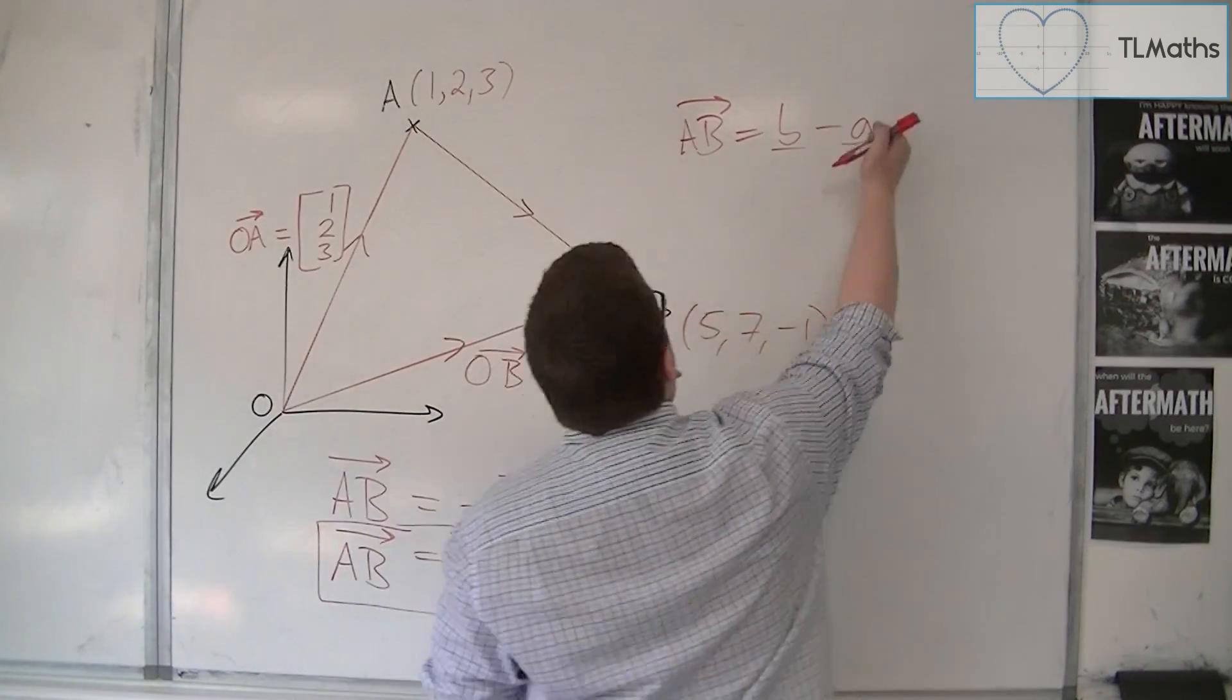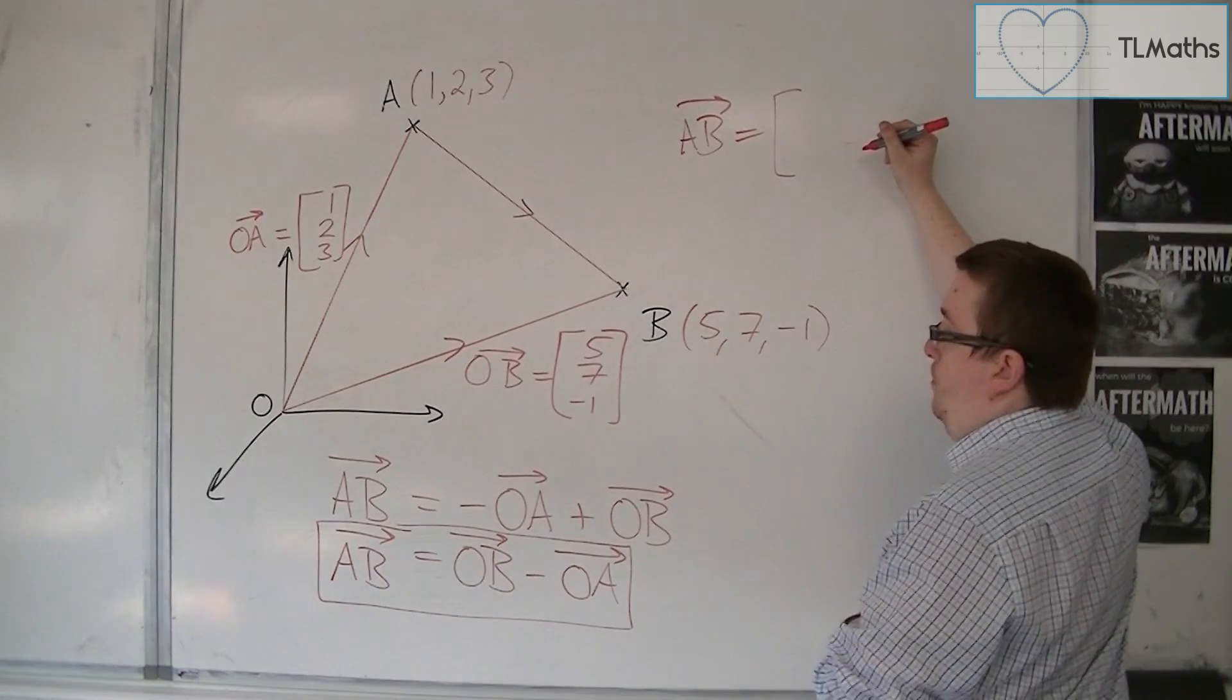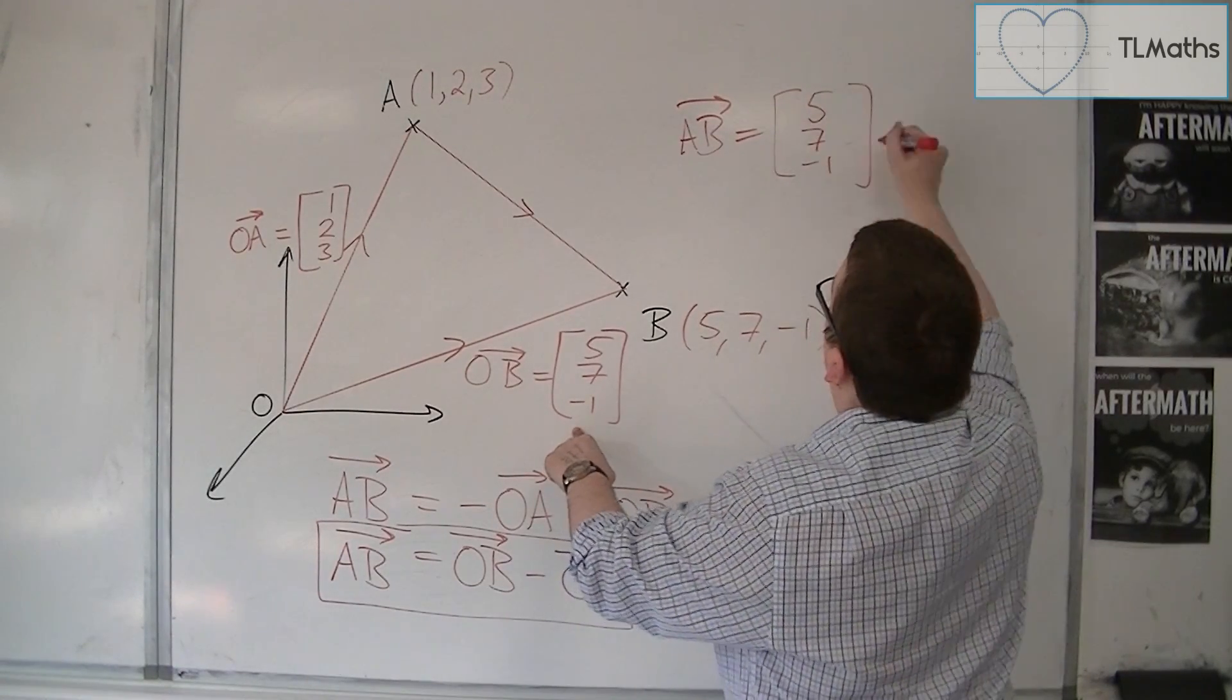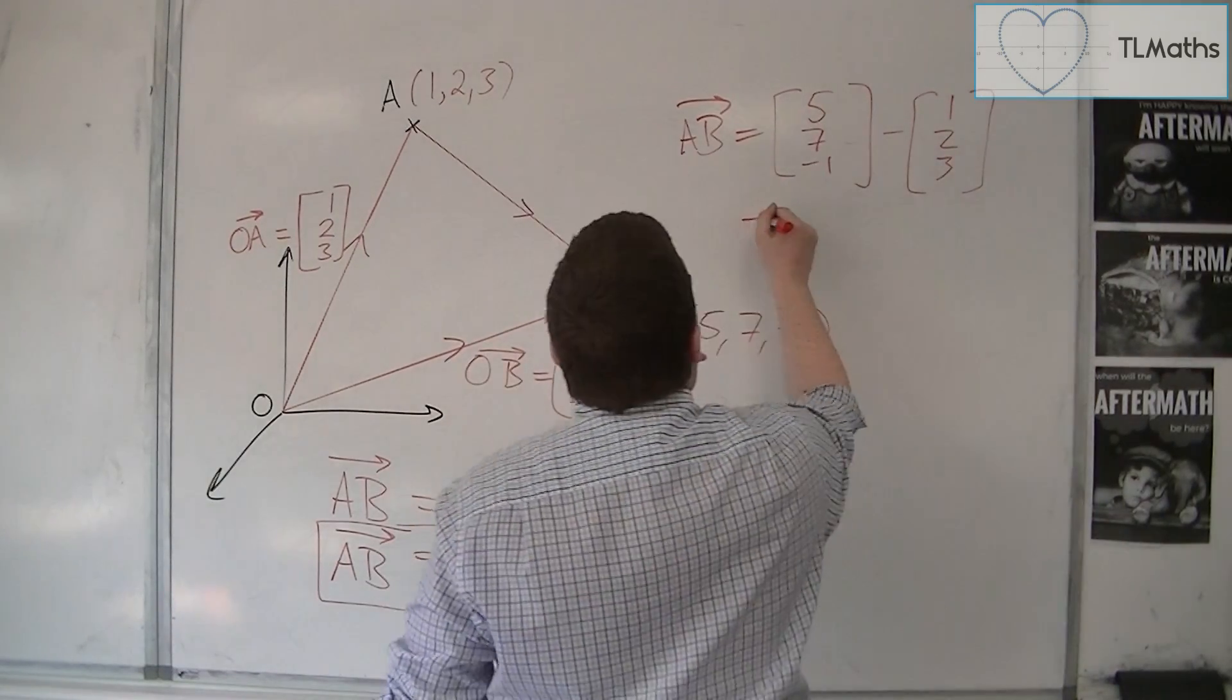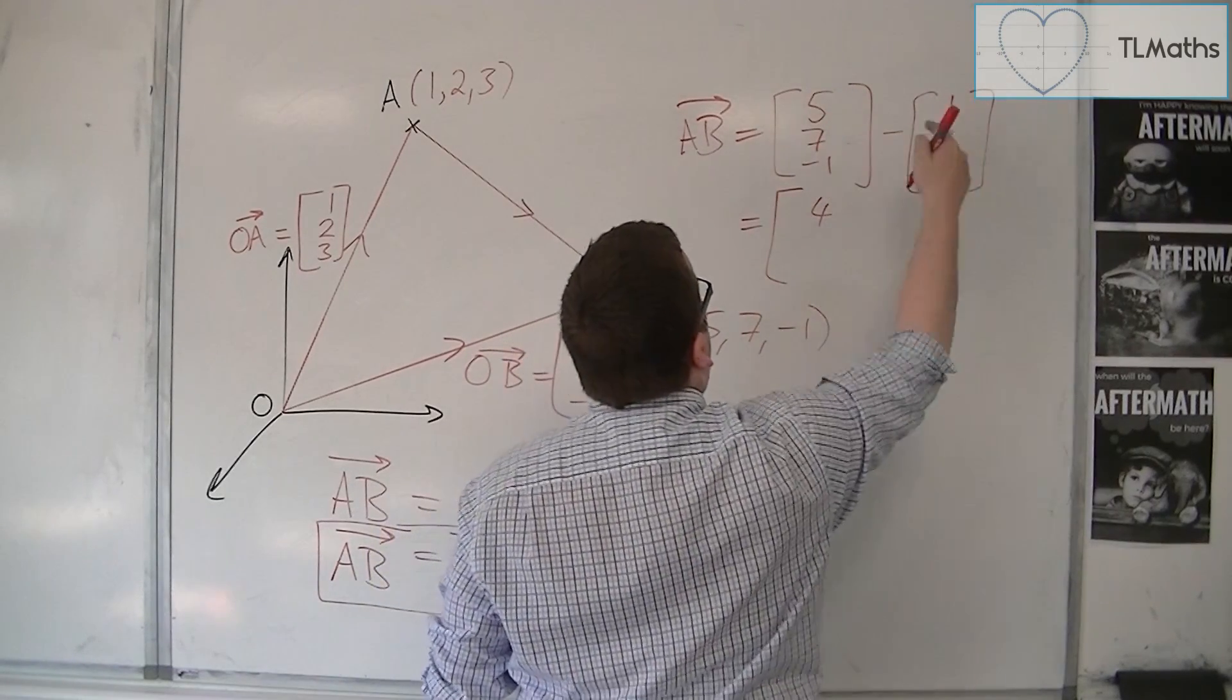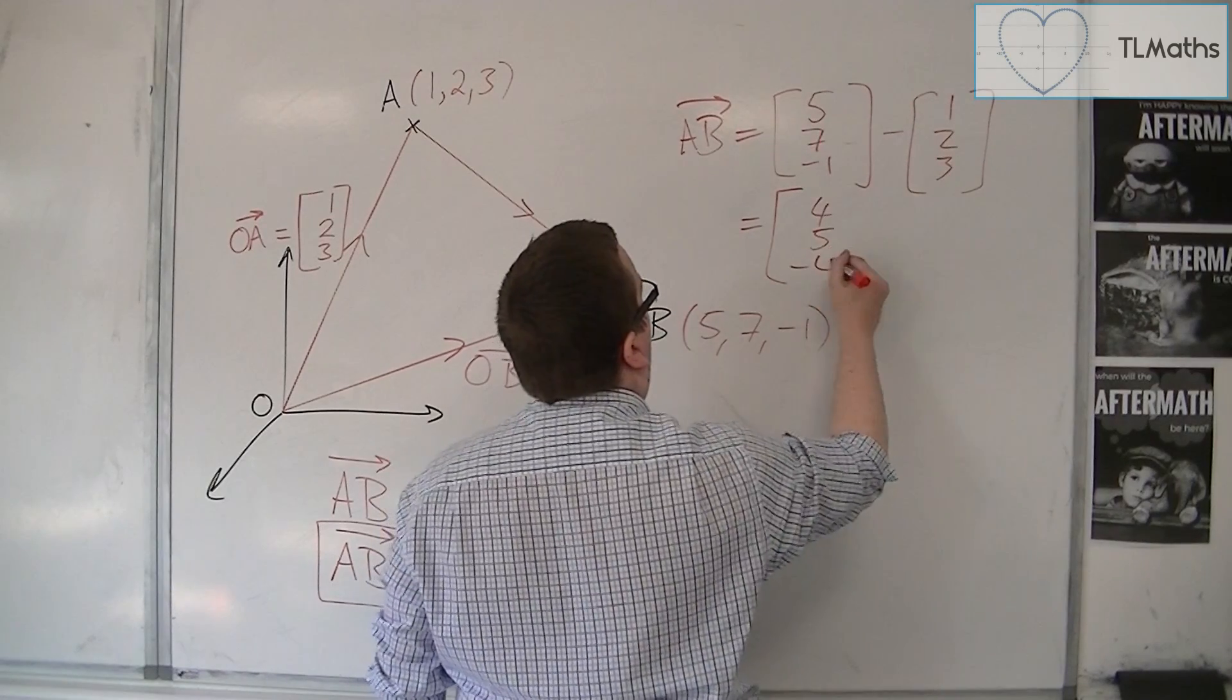So for our case, we have OB, which is 5, 7 minus 1, take away OA, which is 1, 2, 3. And so we get 5, take away O, is 4, 7, take away O, is 5, minus 1, take away O, 3, is minus 4.